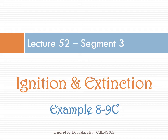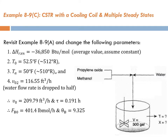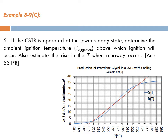Here we are again in segment 3, concentrating on ignition using the same example 89C. The fifth requirement asks: if the CSTR is operated at the lower steady state, what are you afraid of? You are not afraid of extinction since you are already at the lower steady state. You are afraid of ignition — that your reactor will go from a lower steady state with lower temperature and ignite to a higher temperature.